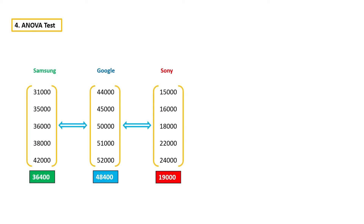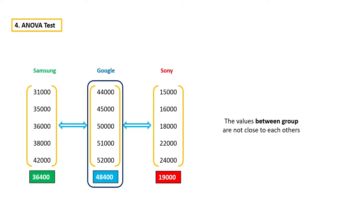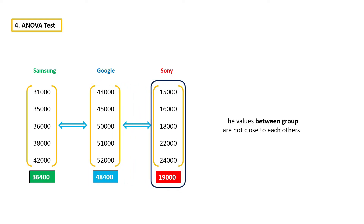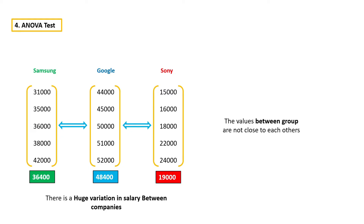In other words, we can say there is less variation within groups. But if you compare groups, the values between groups are not close to each other — the groups do not look similar to each other. For example, if you compare Samsung with Google: in Samsung, salary ranges from 31,000 to 42,000, whereas in Google, salary ranges from 44,000 to 52,000. Obviously, there is a huge difference between Samsung and Google, which indicates that there is a huge variation in salary between companies. So, there is a huge difference between groups.